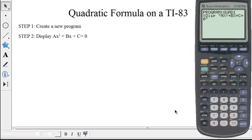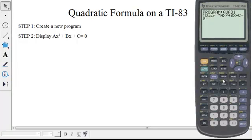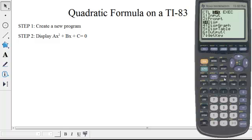The second step is to display the equation ax squared plus bx plus c equal to zero in your program as shown here. The display command is found by clicking on program, sliding over to the input output menu, and then clicking on display.